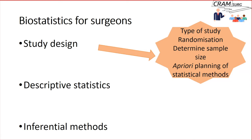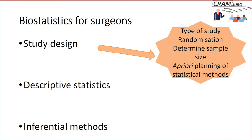The second area is descriptive statistics, where you simply define and describe the data you've collected — using frequencies and percentages for categories, or average and spread for numerical data, along with charts, tables, and figures. Almost any clinical research paper will have a significant element of descriptive statistics. The third area, which becomes more complicated, is inferential methods, where statistical methods are used to draw inferences from the data you've described.